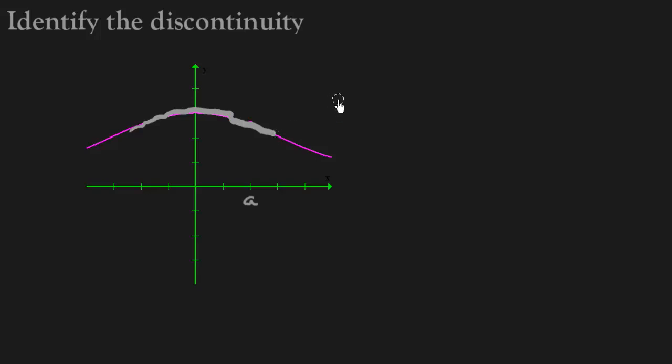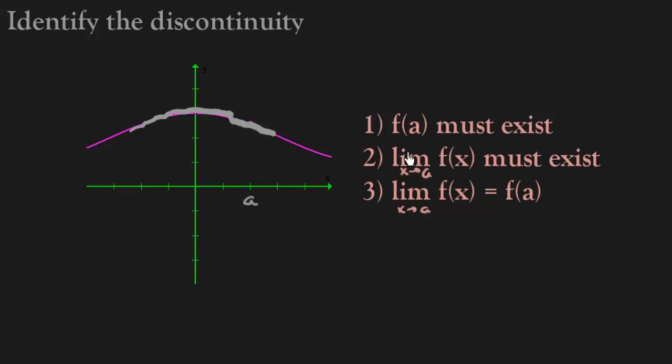So written in our calculus notation, f(a) must exist, which means you have to have a point actually at that spot. The limit must exist, which means that when you're coming in from the left and coming in from the right you have to meet.